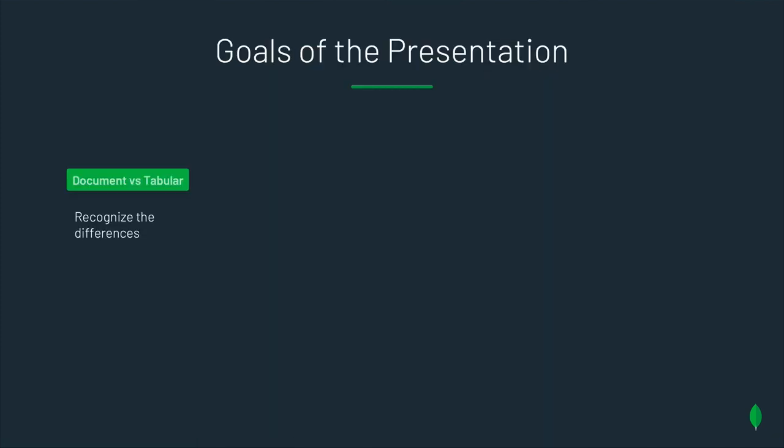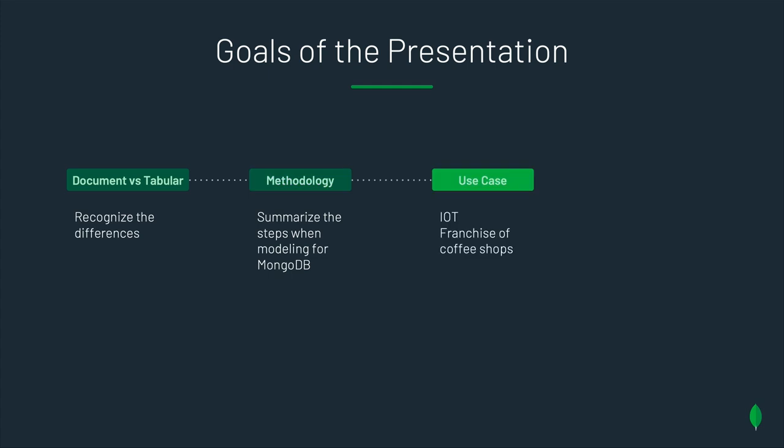This presentation is divided into four sections. In the first section, we'll highlight the differences between a document database and a tabular database. Then we'll introduce our modeling methodology, which is at the core of this presentation. We will illustrate the methodology with a complete example. And finally, we'll spend a little bit of time with the last phase of the methodology, which is to apply schema design patterns.